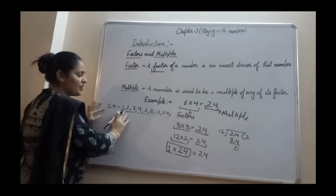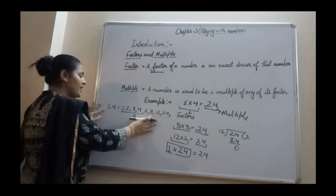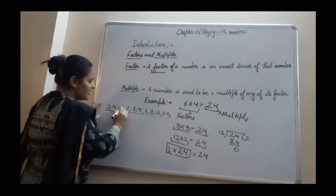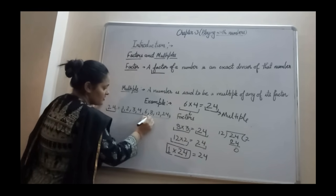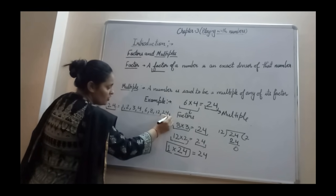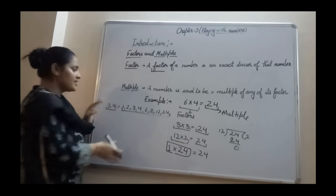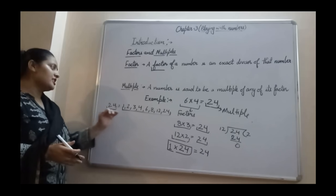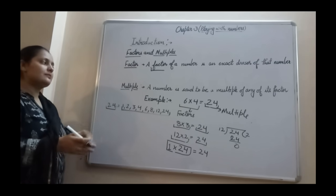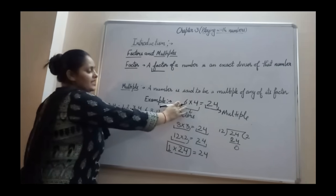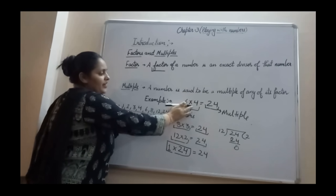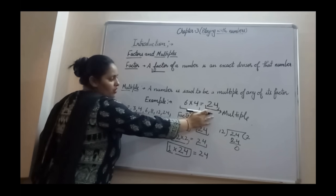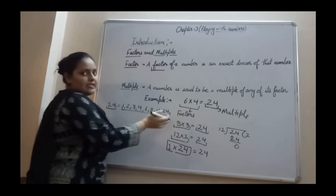So from here we conclude that these are the factors of number 24. When you multiply, you will get this multiple from these factors. The multiplicands are your factors and your product is always your multiple.